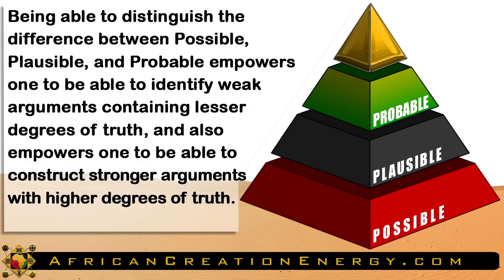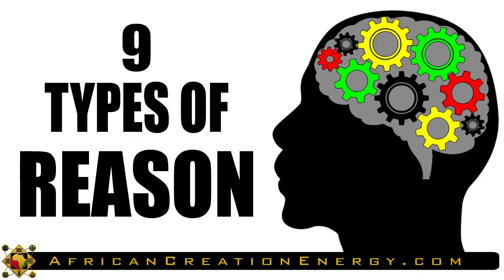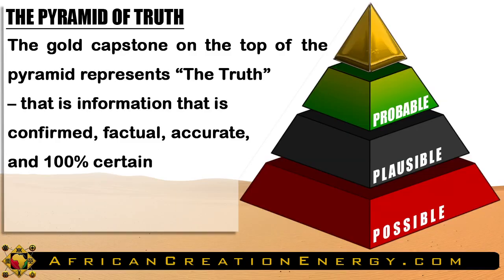Being able to distinguish the difference between possible, plausible, and probable empowers one to identify weak arguments containing lesser degrees of truth, and also empowers one to construct stronger arguments with higher degrees of truth. This presentation builds on concepts presented in one of my earlier videos entitled Nine Types of Reason, which serves as a prerequisite.